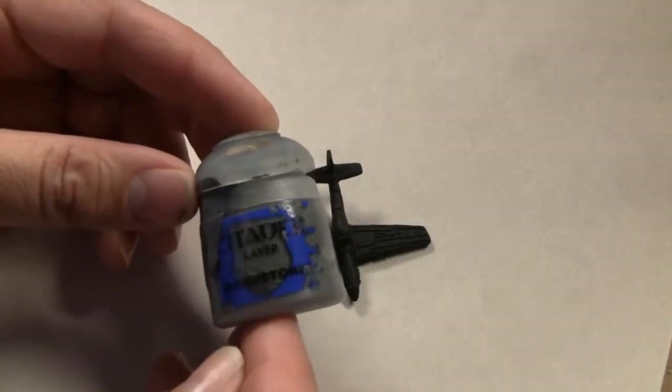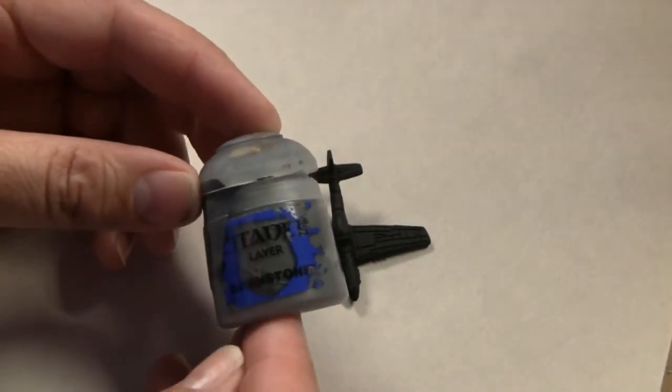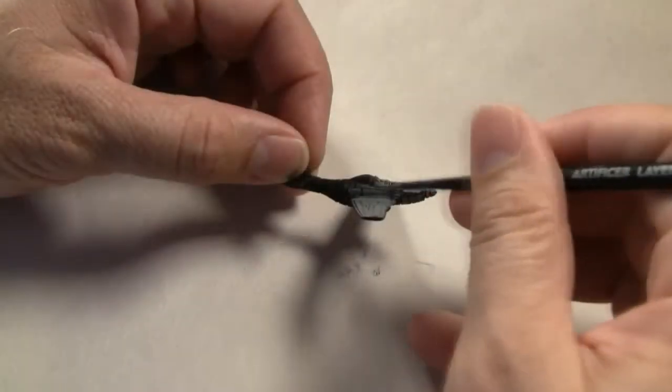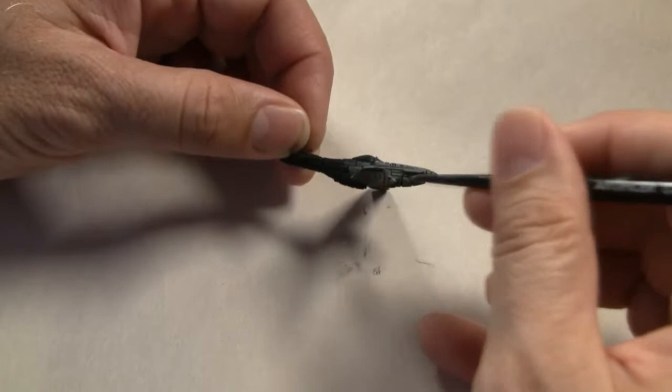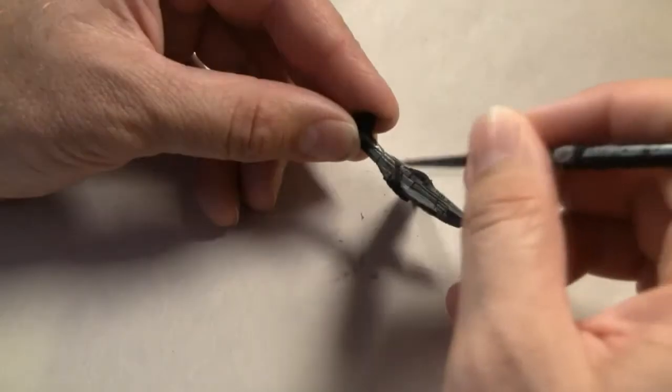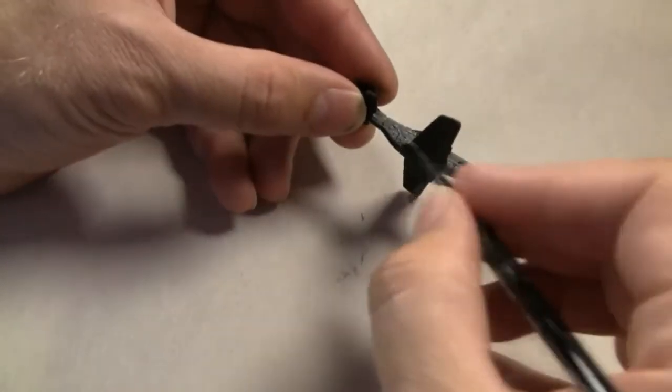For the first layer of paints, we want to use a middle gray color. I'm going to be using Dawnstone Gray from Games Workshop Citadel line of paints, but any kind of medium gray color will work well.